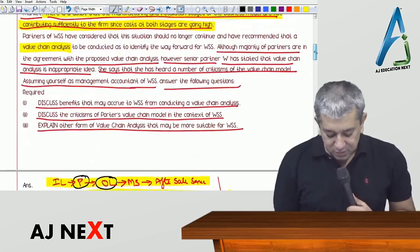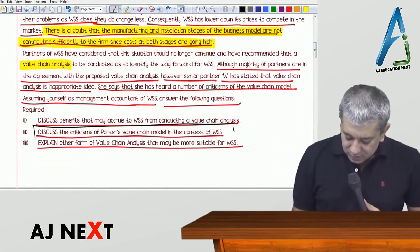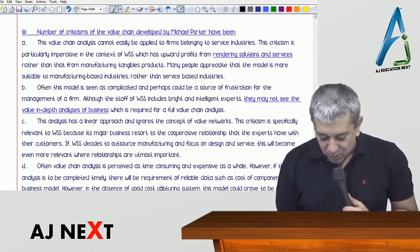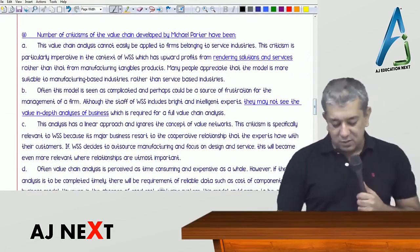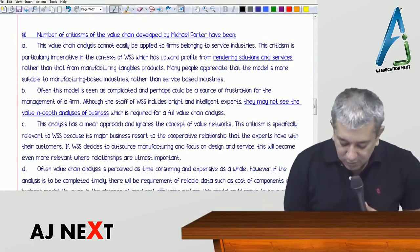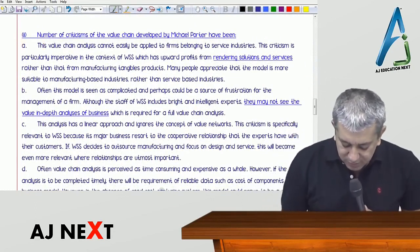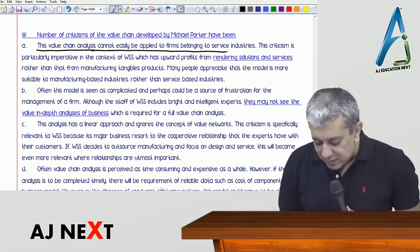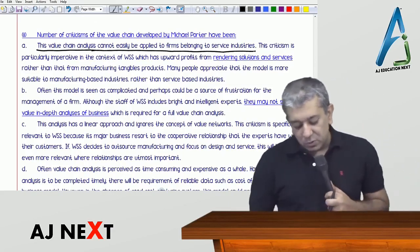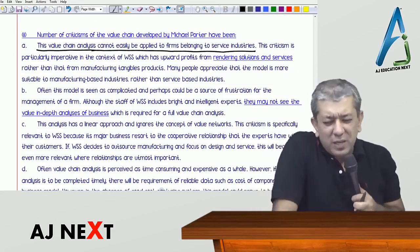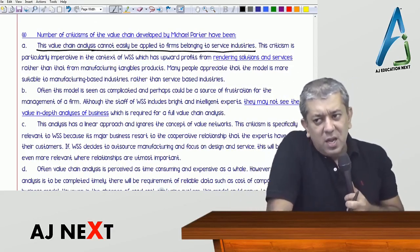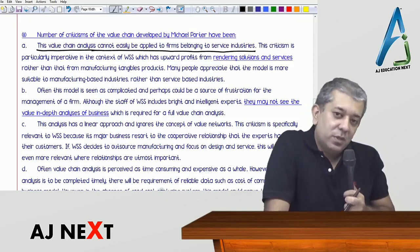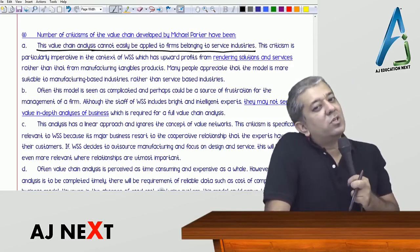Now for part two — discuss the criticisms of Porter's value chain analysis in reference to this company. The first criticism is that value chain analysis cannot be easily applied to firms belonging to the service industry — it is mainly there for the manufacturing sector. If you look at the basic structure of WSS, it is both a service company and a manufacturing company. For such companies it becomes very difficult because value chain analysis is a horizontal analysis.